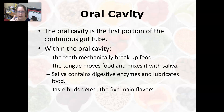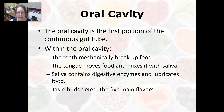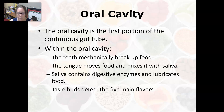The oral cavity is the beginning of digestion and the first portion of the continuous gut tube. Teeth mechanically break up food, and the tongue moves food around and mixes it with saliva. Saliva contains digestive enzymes, particularly salivary amylase, which begins breaking down carbohydrates — that's why starchy foods can taste sweet in your mouth. Saliva also lubricates food with a little mucus, making it easier to swallow.